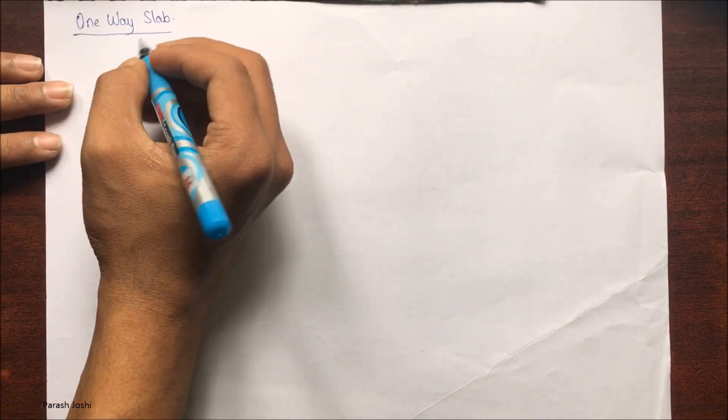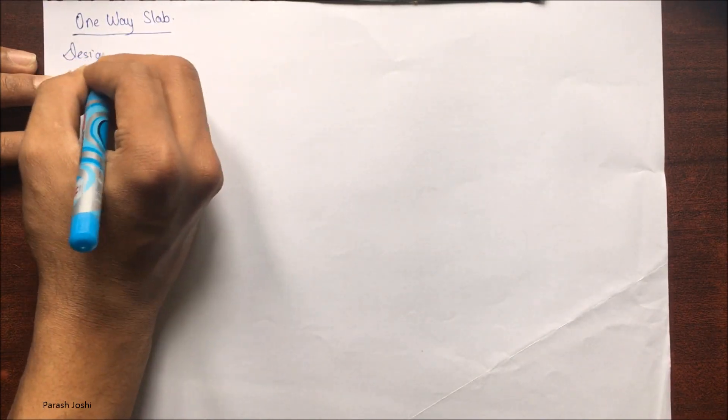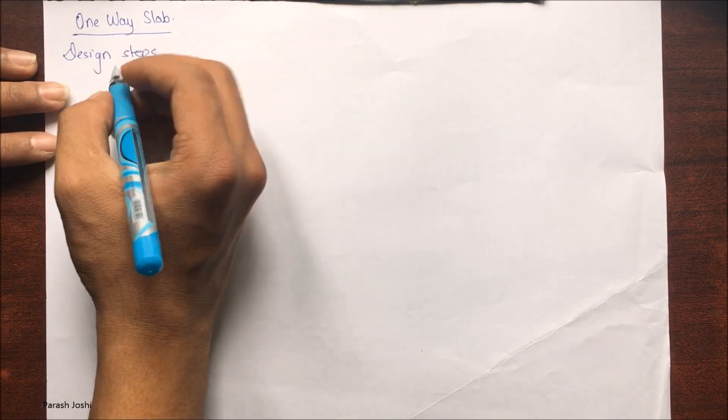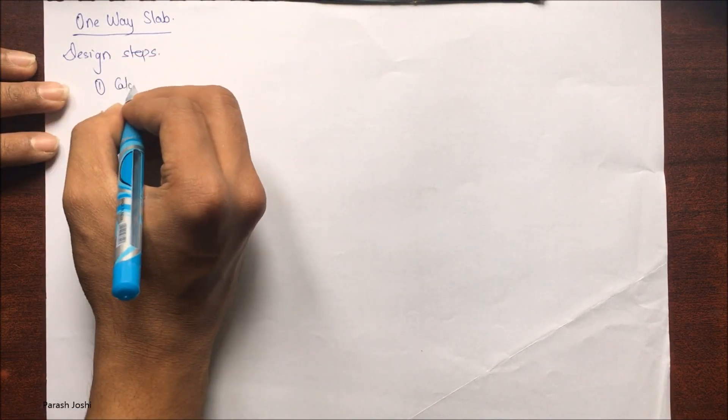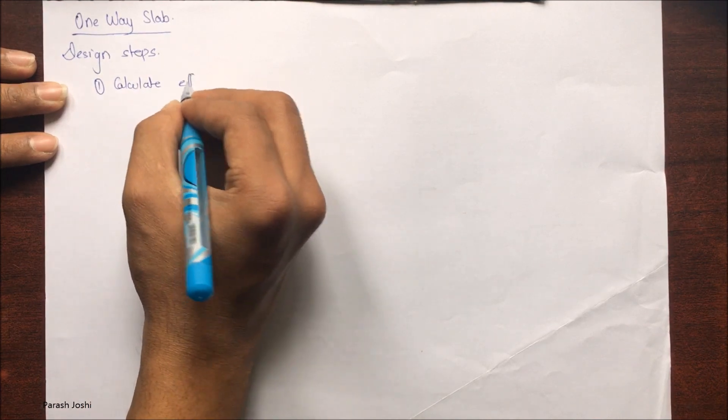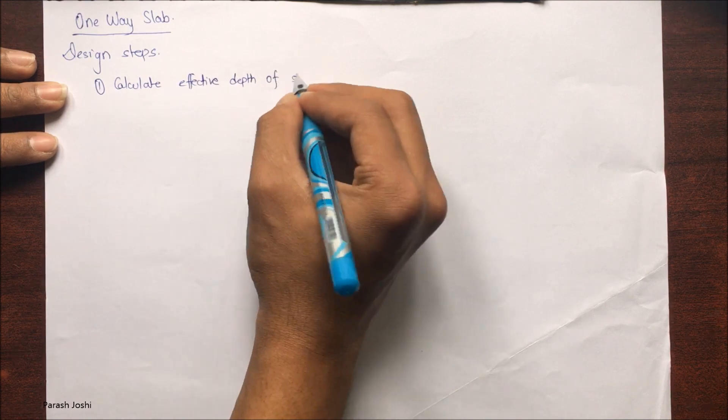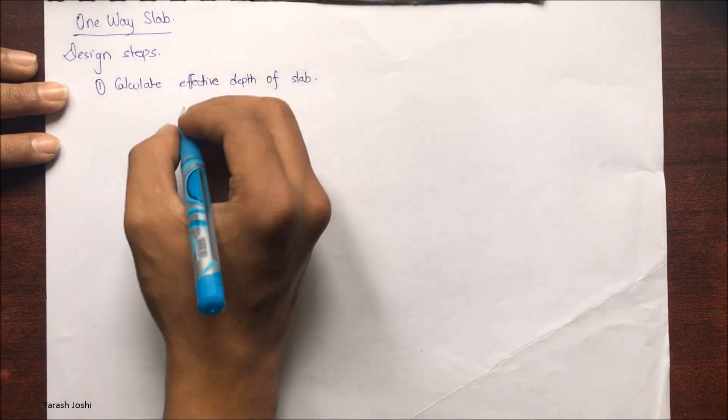Starting with the one-way slab design steps, the very first step is to calculate the effective depth of the slab, that is d (small d). Capital D will be the total depth.